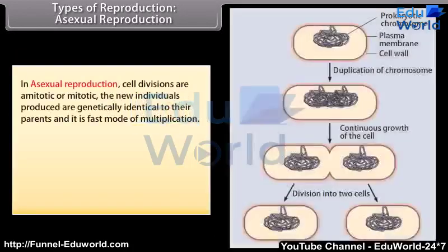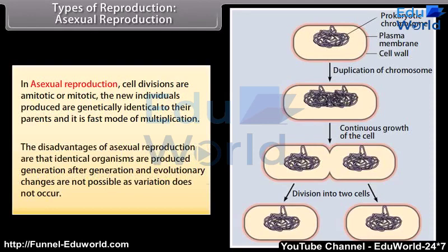In asexual reproduction, cell divisions are ameiotic or mitotic. The new individuals produced are genetically identical to their parents, and it is a fast mode of multiplication. The disadvantages are that identical organisms are produced generation after generation and evolutionary changes are not possible as variation does not occur.